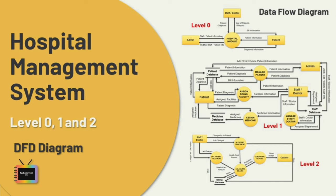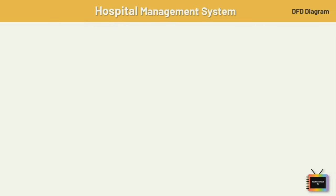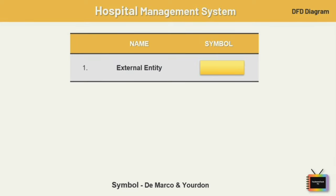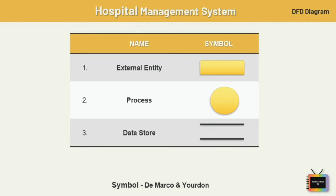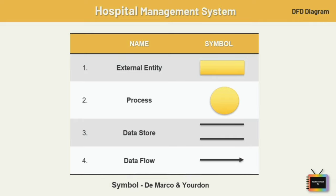This DFD diagram uses defined symbols to present the system's processes. I am using the notation described by DeMarco and Yourdon. First is external entities — the entry and exit points for data entering and leaving the system, also referred to as terminators, sources, sinks, and actors. Next is process — it receives input data and produces output data in a different form or content, and every process has a name identifying its function. Next is data store — a table that stores files or repositories for future use. Last is data flow — the flow of data between external entities, processes, and data stores.